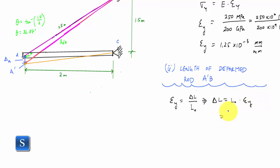And here, this would just be 2.5 meters times 1.25 times 10 to the minus 3. And this is 3.125 times 10 to the minus 3 meter, which is the same as 3.125 millimeters.